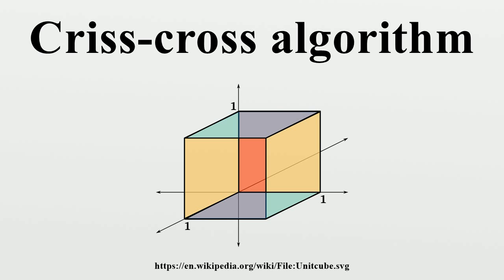When initialized at a random corner of the cube, the Criss-Cross algorithm visits only D additional corners. However, according to a 1994 paper by Fukuda and Namiki, the simplex algorithm also takes on average D steps for a cube. Like the simplex algorithm, the Criss-Cross algorithm visits exactly three additional corners of the three-dimensional cube on average.